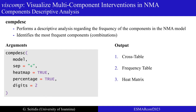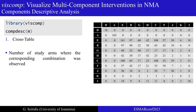Exploring the geometry of the network is essential, especially when dealing with large networks with complex structures. Component descriptive analysis can assist in achieving this goal. Through the function compdesk, we can perform a descriptive analysis regarding the frequency of components and identify the most frequent component combinations. The only required input is the network meta-analysis model, denoted by the argument model. The rest of the arguments refer to the separator symbol between components, whether the heat matrix would be plotted, the usage of percentages instead of fraction values, and the number of digits. The function returns three objects: the cross table, the frequency table, and the heat matrix.